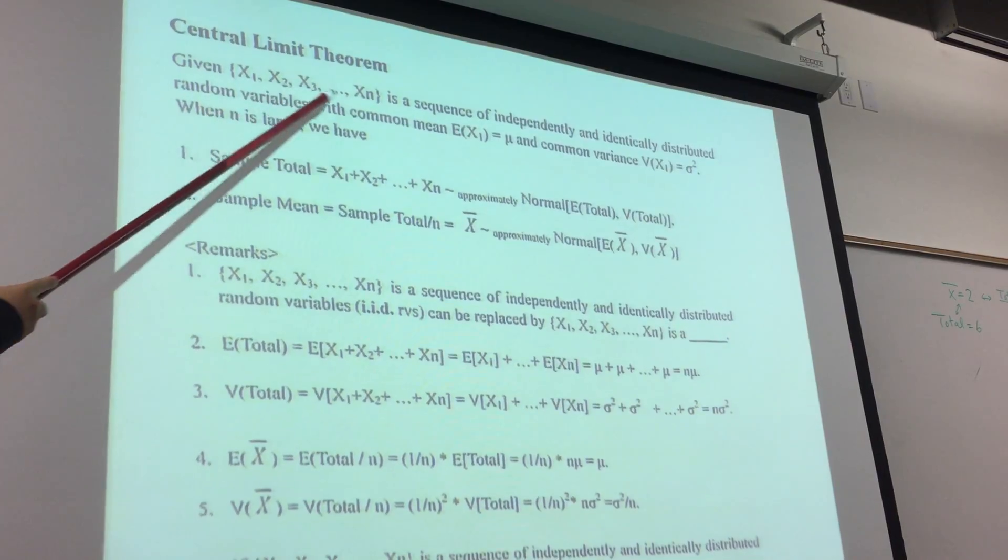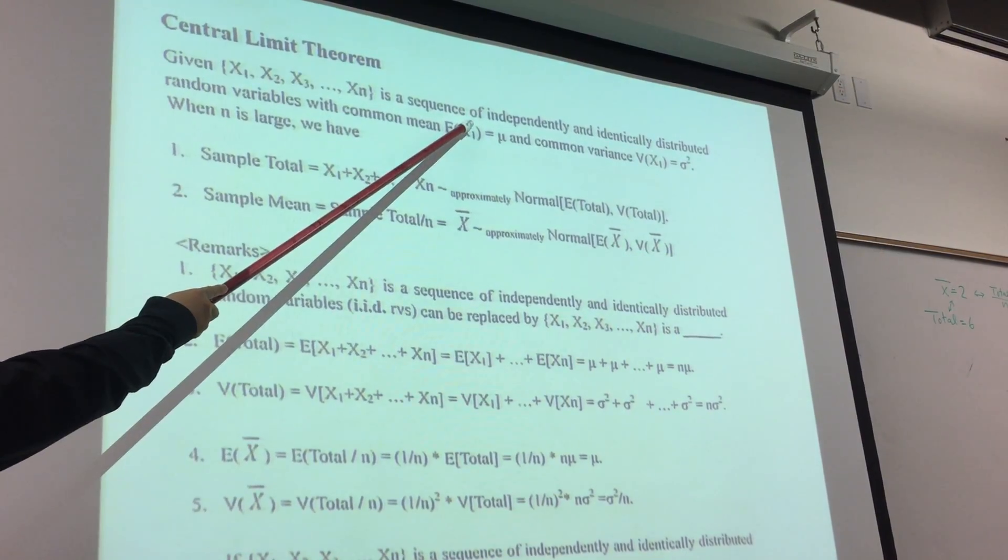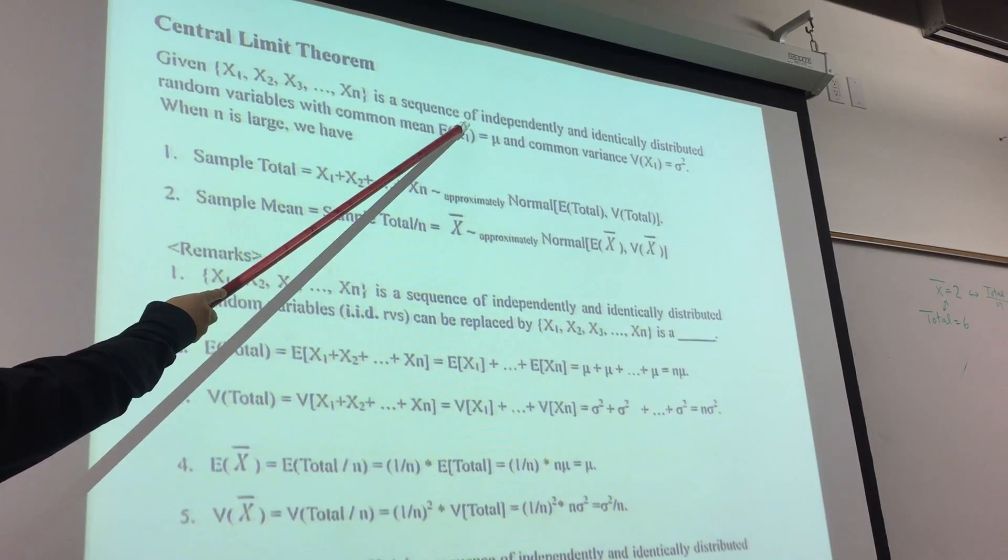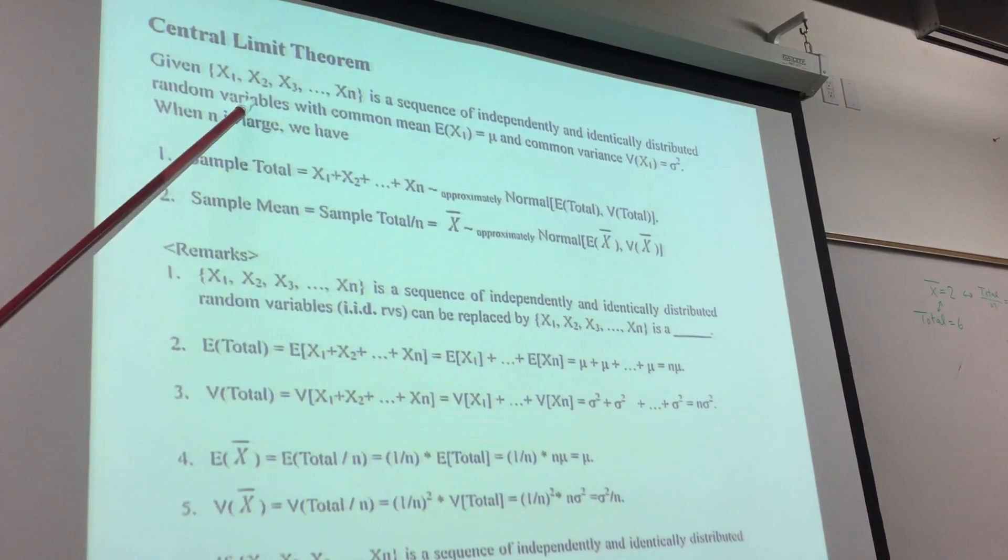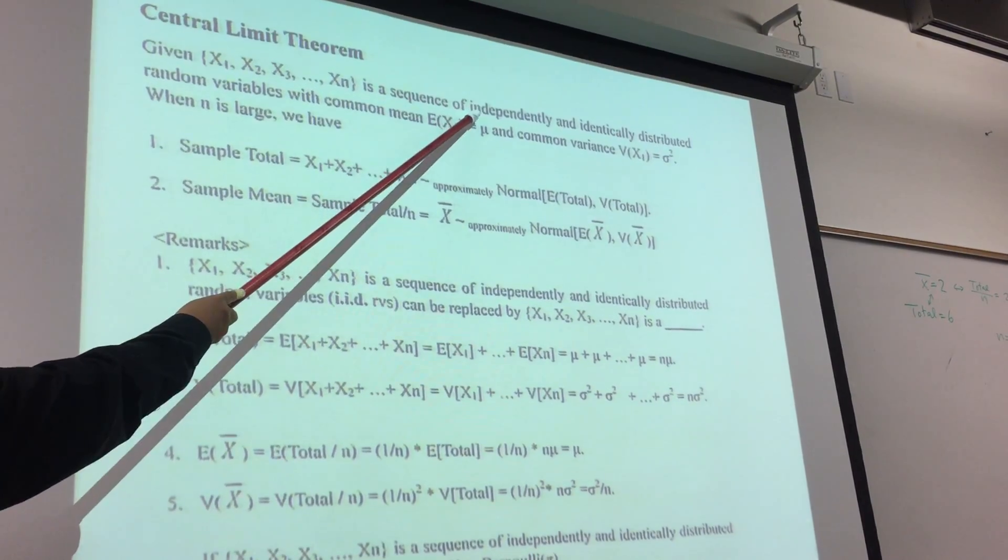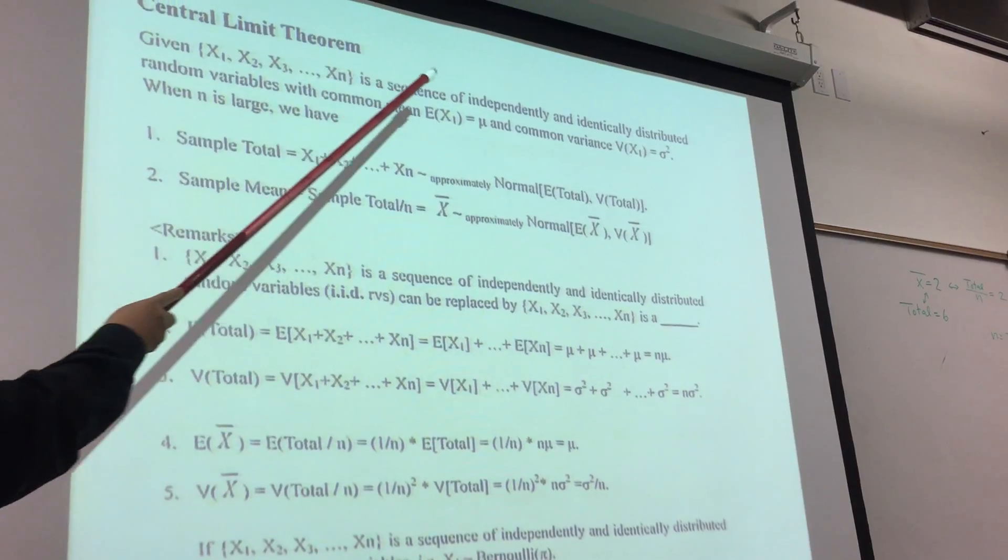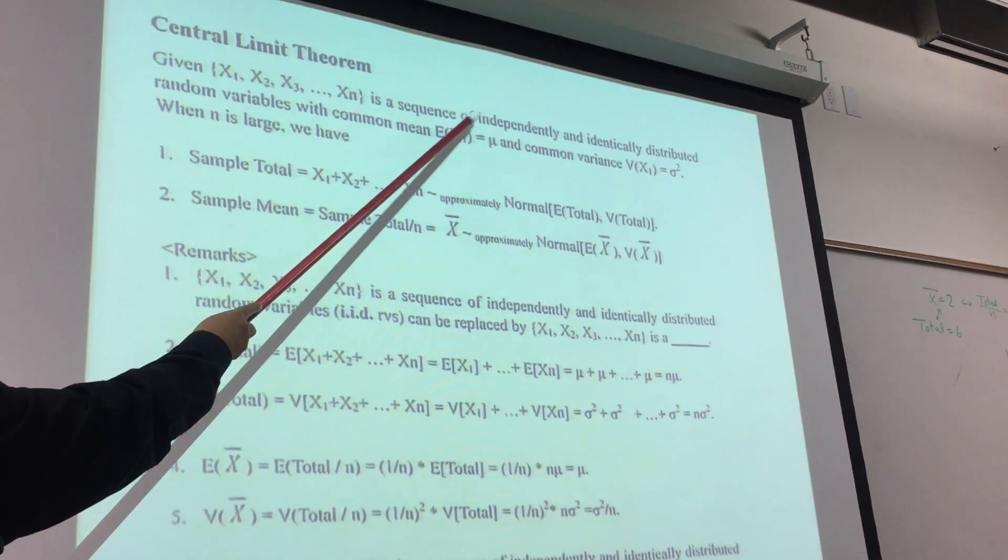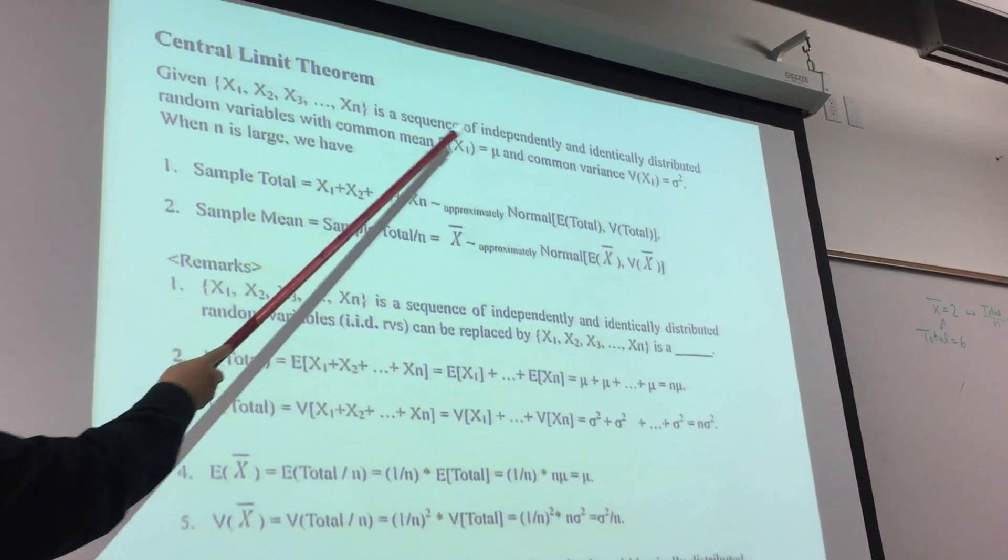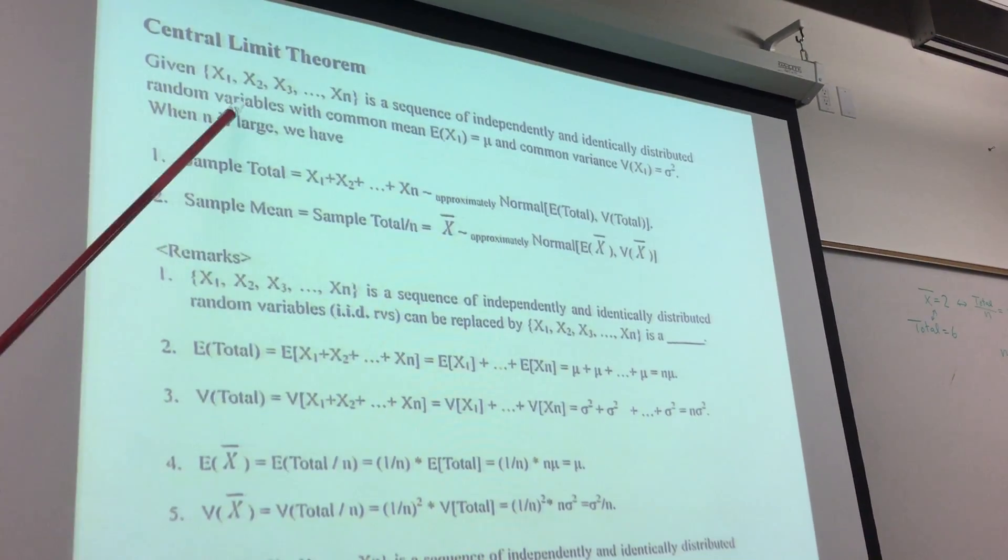Given X1 up to Xn is a sequence of independently and identically distributed random variables. A sequence of independent and identically distributed random variables can be replaced by a sequence of iid random variables. Take the first letter - iid - random variable.